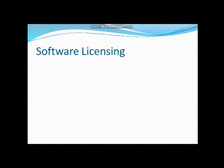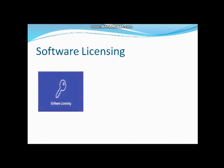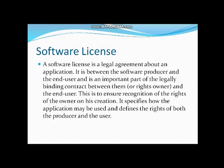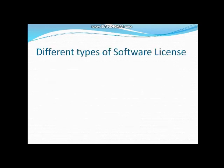Now, what is software licensing? There are 9 different types of software licensing. A software license is a legal agreement about an application between the software producer and the end user — the person who is using it. It specifies how the application may be used and defines the rights of both the producer and the user. The different types of software license are: proprietary license, GNU General Public License, End User License Agreement (EULA), workstation license, concurrent use license, site license, perpetual license, non-perpetual license, and license with maintenance.